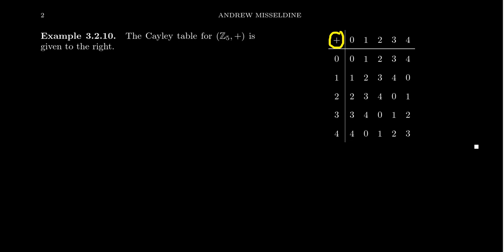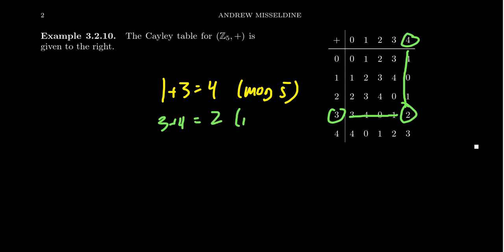If we pick the number 1 and we pick the number 3, if we come together we find the number 4. What this means is 1 plus 3 is equal to 4 when we work mod 5. As another example, if we take the number 3 and we take the number 4, we get the number 2. This means that 3 plus 4 is equal to 2 when we work mod 5. So we can read the binary operation off of the Cayley table by looking up the rows and the columns.